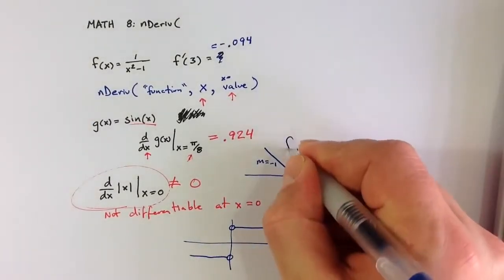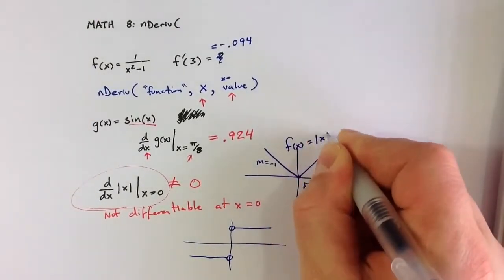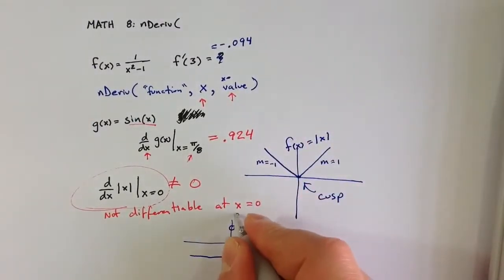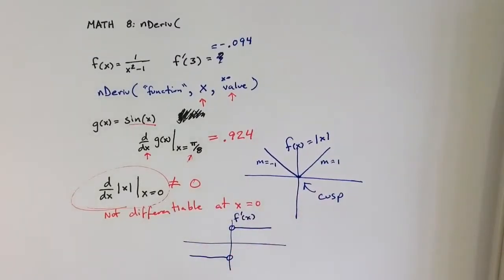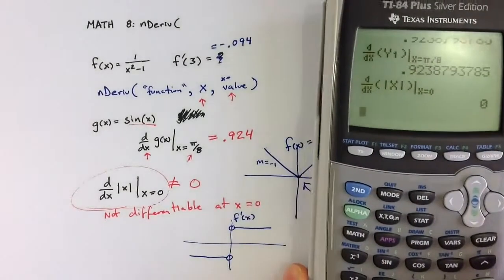If f of x equals the absolute value of x, this is what f prime of x would look like. But the calculator can't really figure that out.